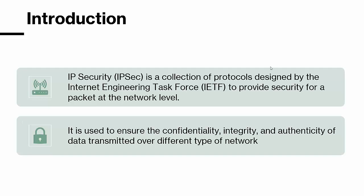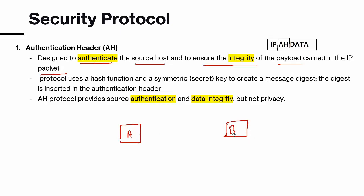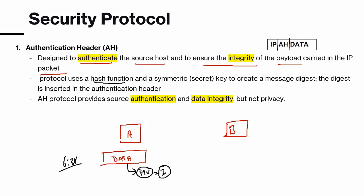The first protocol in IPSec is AH — Authentication Header. AH is designed to authenticate the source host and ensure the integrity of the payload carried in the IP packet. We create a hash value of the data, which represents the integrity state of that data at a given point in time. This hash is then encrypted by the symmetric key, and an AH header is appended as a signature into the data.